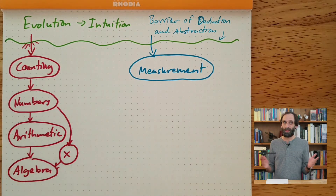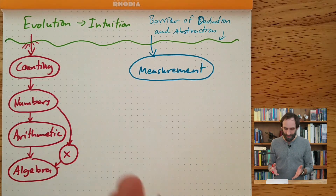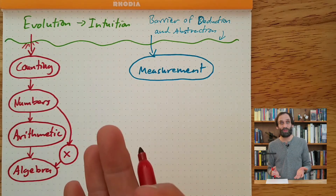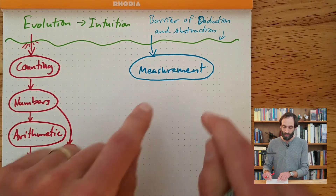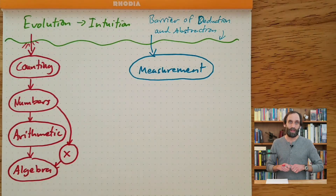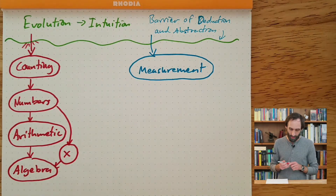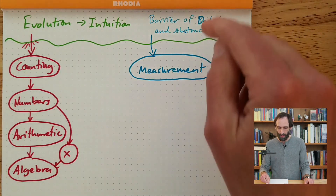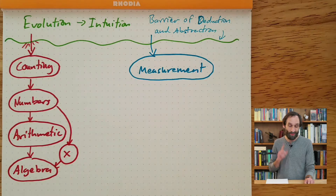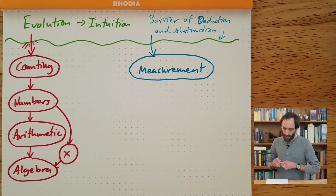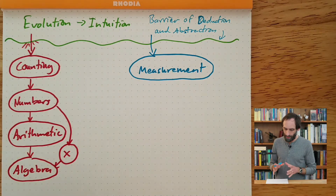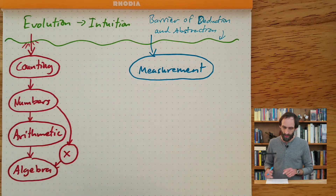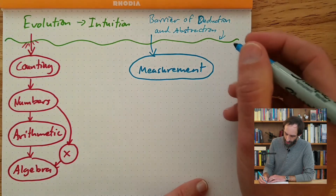Now you might ask, what does that have to do with geometry? This is supposed to be a course about geometry. Well, of course that is where the other track comes in — the other breakthrough through the barrier of deduction and abstraction. So let's talk about measurement. We're going to talk about this track a little more, because this is a course about geometry.